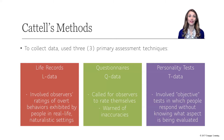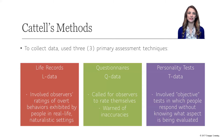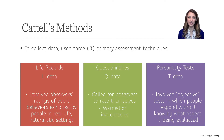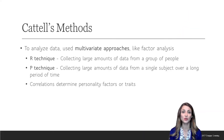L-data stands for life records — records of your daily behaviors in everyday situations, like work or school. Q-data stands for questionnaire data. Cattell's questionnaires asked test takers to rate their own behaviors, and he early on warned of the potential for faking and inaccuracies in personality testing. T-data stands for personality tests, which are different from questionnaires because, according to Cattell, they attempt to measure personality without individuals knowing their personality is being measured. To analyze data, Cattell relied on multivariate approaches like factor analysis. Bivariate approaches look at two variables; multivariate approaches look at multiple variables and the relationships between them.